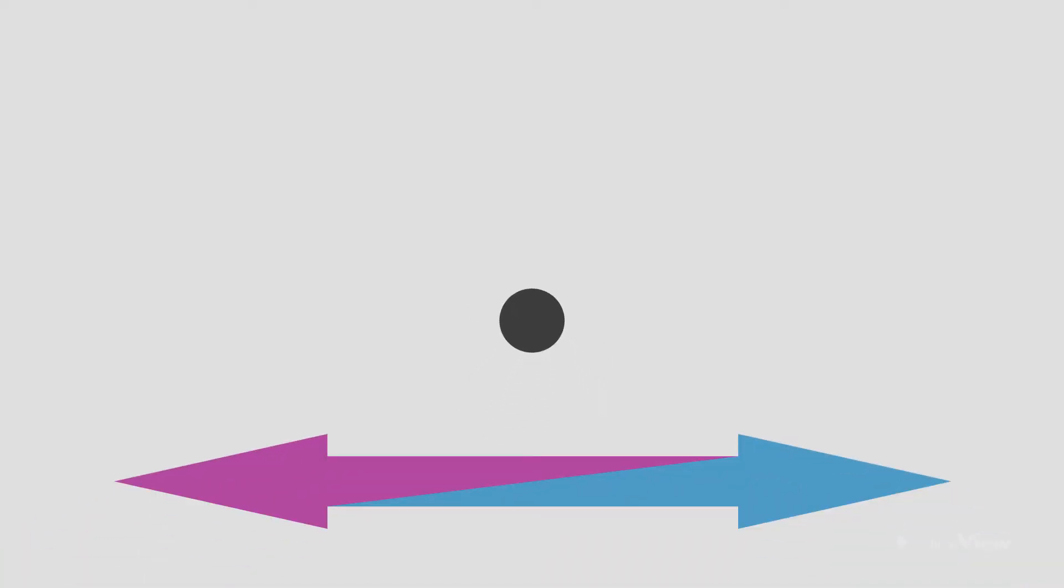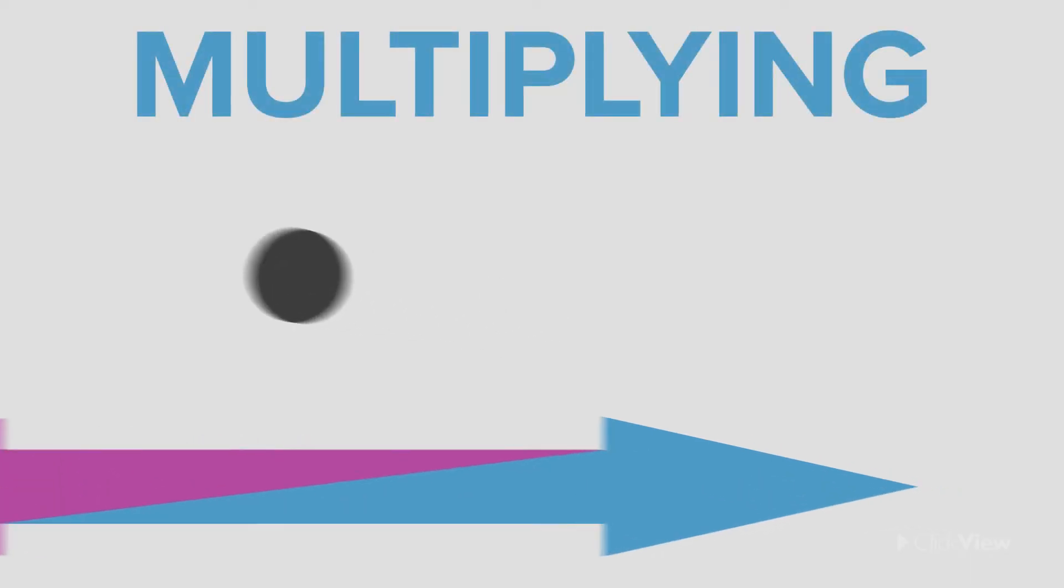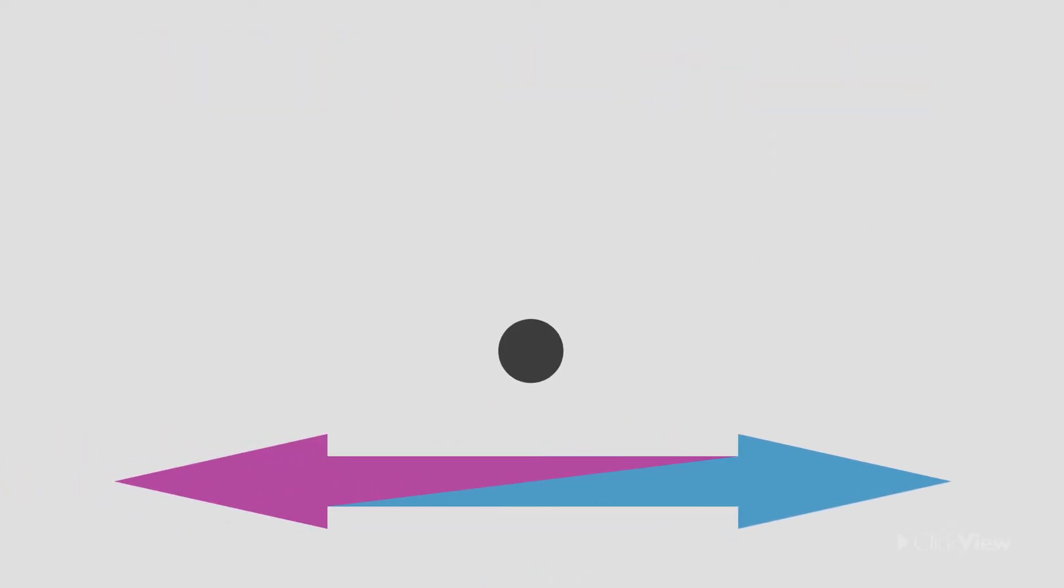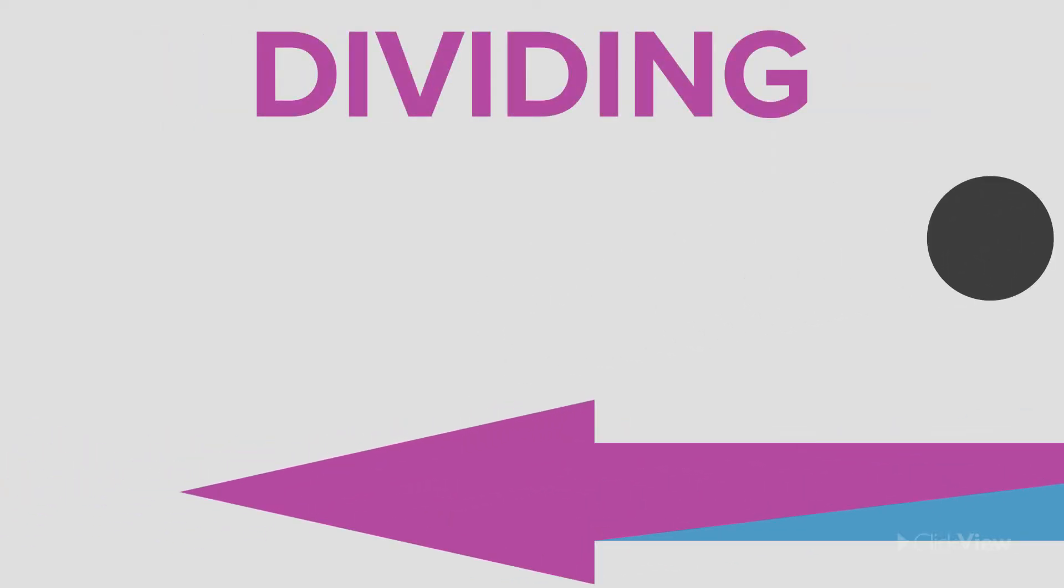When we multiply or divide a decimal number by multiples of powers of 10, all we have to do is move the decimal point to the right or to the left. The first trick to remember is which direction we move our decimal point. When we are multiplying, we need to move the decimal place to the right. When we are dividing, we move the decimal place to the left.